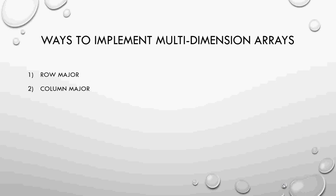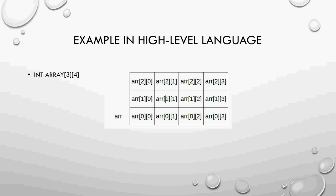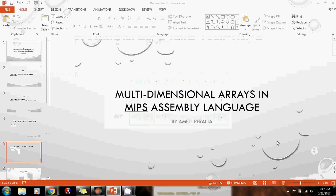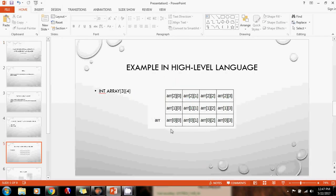In a high-level language like C or C++, the declaration `int array[3][4]` creates a two-dimensional array of integers that has three rows and four columns. You can observe all the elements there — the first element is here, then you have the second element, the third, and so on.